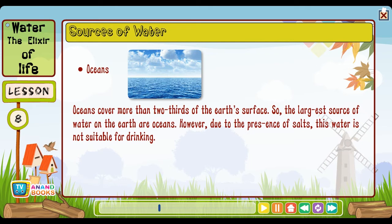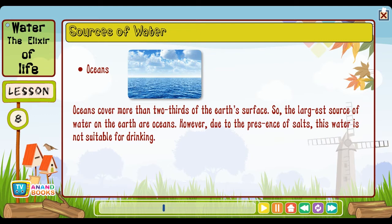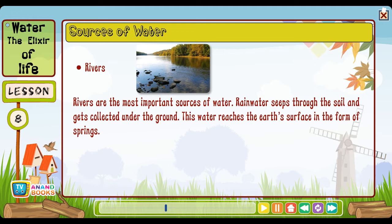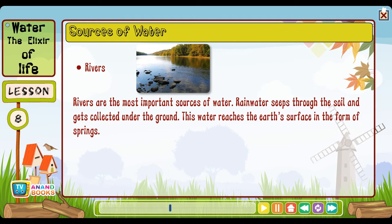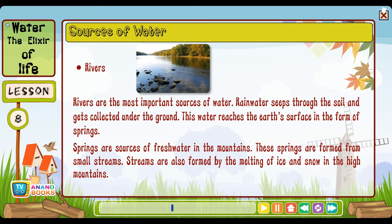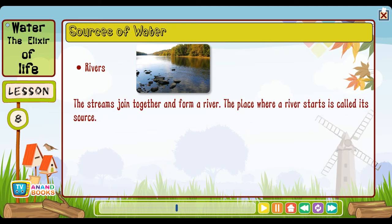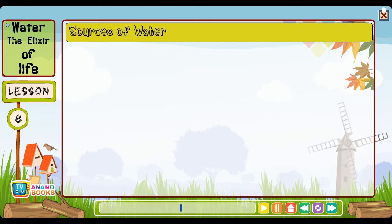Oceans cover more than two-thirds of the earth's surface — the largest source of water on earth — however, due to the presence of salts this water is not suitable for drinking. Rivers are the most important sources of water. Rain water seeps through the soil and gets collected underground. This water reaches the earth's surface in the form of springs — sources of fresh water in the mountains. These springs form small streams, which are also formed by the melting of ice and snow in high mountains. The streams join together and form a river. The place where a river starts is called its source — the Gangotri glacier is the source of the river Ganges.